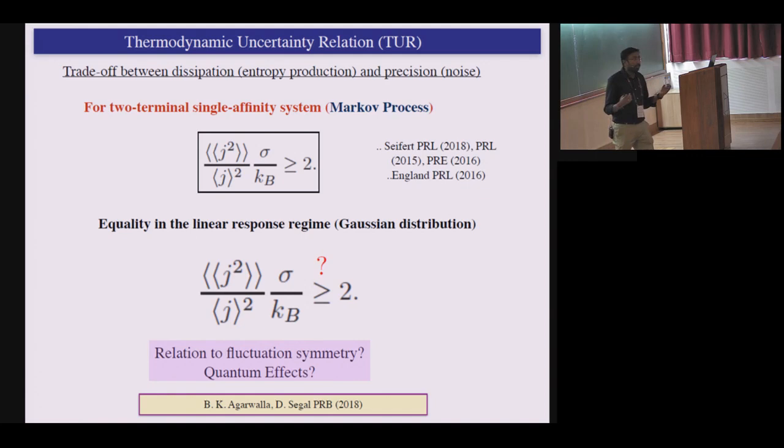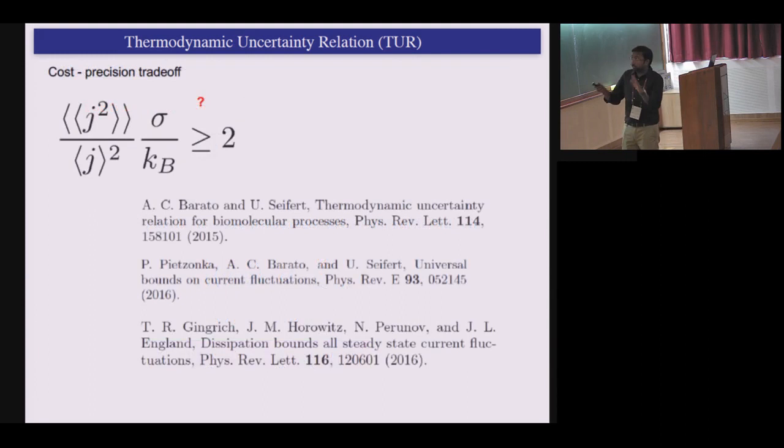So what we started asking is how universal this bound is. Is it really classical Markovian? Can I extend it for quantum domain? What happens if I go beyond Markovian? Are there quantum effects that disrupt such bounds? So my idea was that if this is universal, then maybe there should be a hint from the fluctuation relation that I should be probably able to get this bound, because fluctuation relation at the end is universal. So if this bound is universal, maybe there is a way to reach there. And that's precisely what we tried to do.